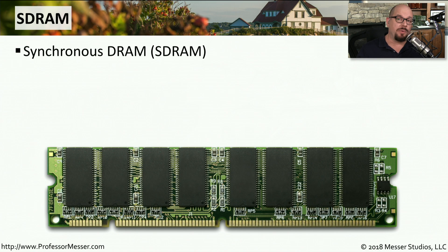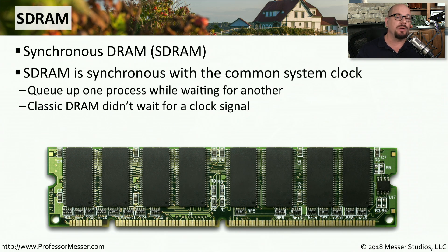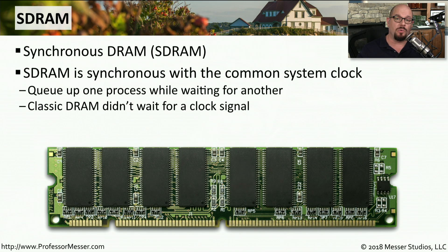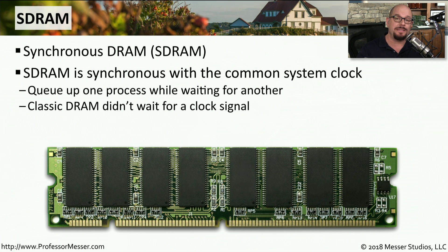The type of dynamic random access memory found on today's computers is called synchronous dynamic random access memory, or SDRAM. It's synchronous because it is synchronized with the common system clock of your computer. The standard flow of communication based on these clock cycles allows the system to queue things up in a very standard format. This is different than earlier types of dynamic random access memory where there was no synchronization, but in today's desktops and laptops, all of the memory we're going to be using will be synchronous RAM.